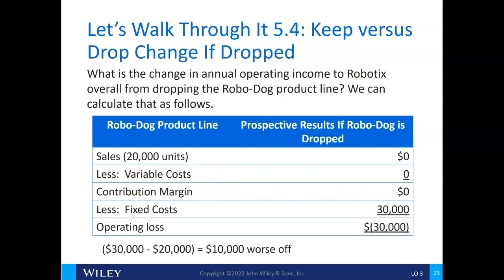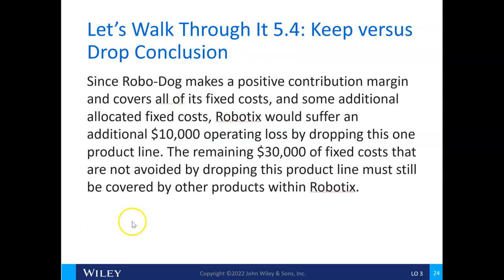If a manager looks at a financial statement with three segments and one is losing money, they might think getting rid of it eliminates the loss — but not necessarily. It depends on what's in those fixed costs. Since the company earns a positive contribution margin that covers all direct fixed costs and some additional allocated fixed costs, they would suffer an additional $10,000 operating loss by dropping the product line. The remaining $30,000 of fixed costs not avoided must still be covered by other products.